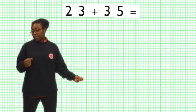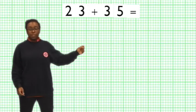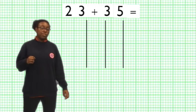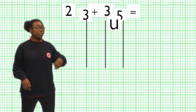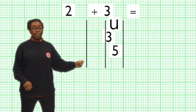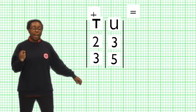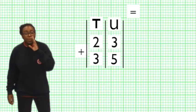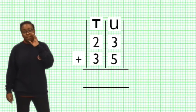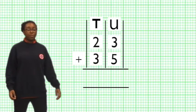So first of all we need some columns. We always start with the units on the right. Then the tens column and don't forget the add sign. This is what makes Mr. Casey Mr. Crazy. Now we're ready to add up.